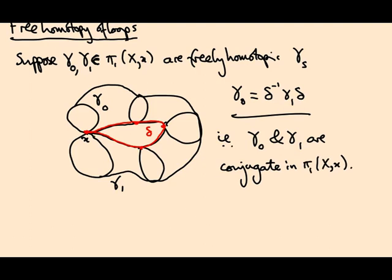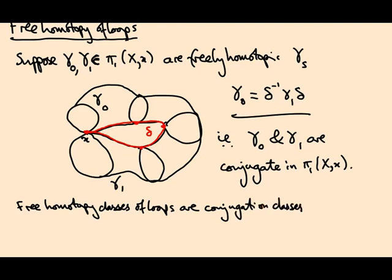And depending on which loop you pick, you can get many different conjugates of the same loop. This is why I said the map from π₁ of X in this case back to itself depends on which path you pick to identify the two base points. So this implies that free homotopy classes of loops are conjugation classes in the fundamental group.